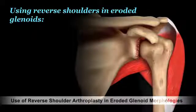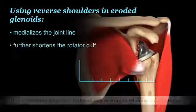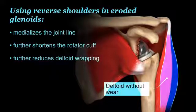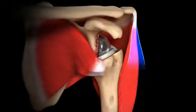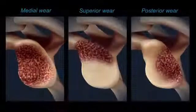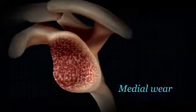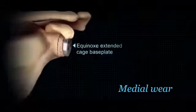Using reverse shoulders in eroded glenoids medializes the joint line, further shortens the rotator cuff, and further reduces deltoid wrapping. Excessive joint medialization can completely eliminate deltoid wrapping and cause the deltoid to generate a distraction force. When using reverse shoulders in medially worn glenoids, the joint line should be lateralized with bone graft or by using thicker glenospheres.